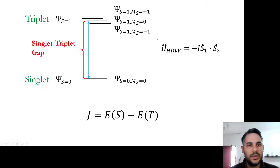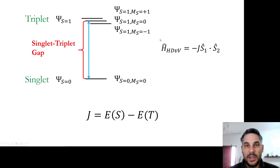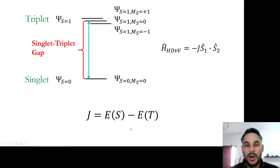In a previous video we saw that triplet wave functions with S equals 1 have three projections: plus 1, 0, and minus 1 of ms, and singlet wave functions have only one projection. If we consider the Heisenberg-Dirac-Van Vleck Hamiltonian, written as minus an exchange coupling constant J times the spin operator acting on spin 1 and spin 2, we can get to an expression where the exchange coupling parameter is related to the singlet energy minus the triplet energy.